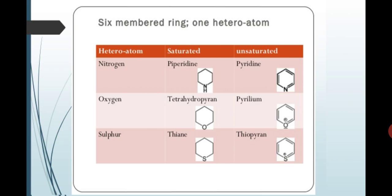Nitrogen saturated is piperidine and unsaturated is pyridine. Oxygen tetrahydropyran and unsaturated is pyrilium. Sulfur is thiane and unsaturated is thiopyridine.